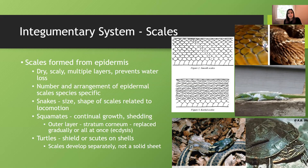In snakes, the size and shape of scales is related to locomotion. There are smooth scales in some snake species and keeled scales in others. The keeled scales have a ridge in the middle. Smooth snakes generally stay on the ground and are fast — like a black racer — whereas keeled scales you usually see in snakes that can climb trees, like the eastern rat snake.